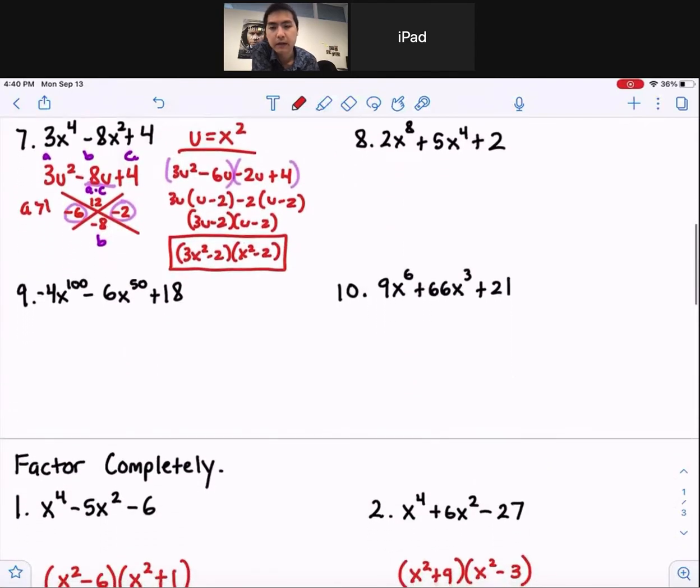Okay, and lastly, number 9. You can factor out a negative 2 from each one of these terms: 2x to the hundredth plus 3x to the fiftieth minus 9.